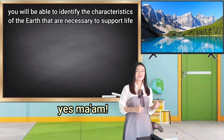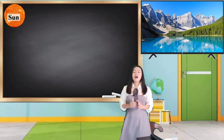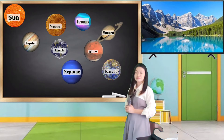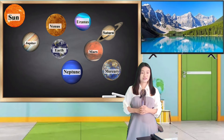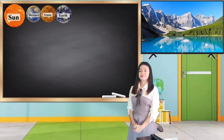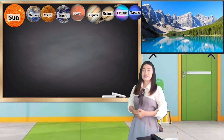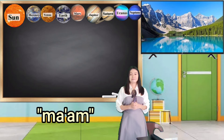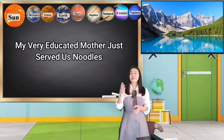Do you remember them? Yes, ma'am. I also have here the pictures of the eight planets. I want you to arrange these planets according to its distance from the sun. Very good. Who can still remember the sentence or mnemonic for remembering the order of the planets? My very educated mother just serve us noodles. That is correct.